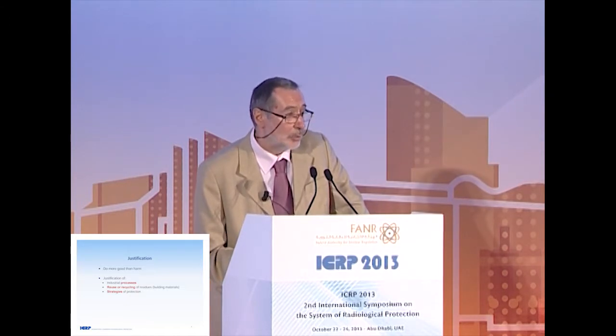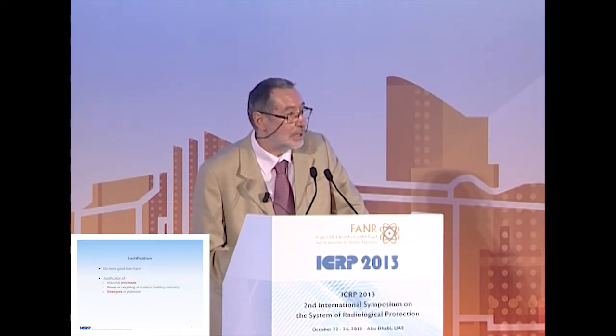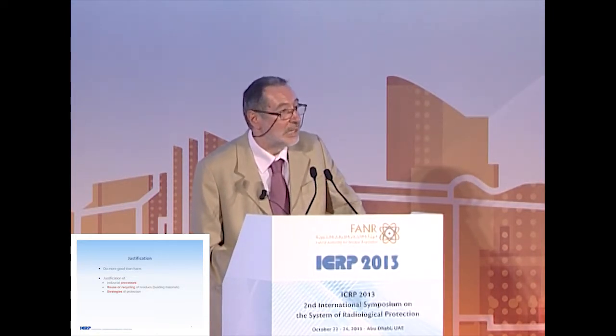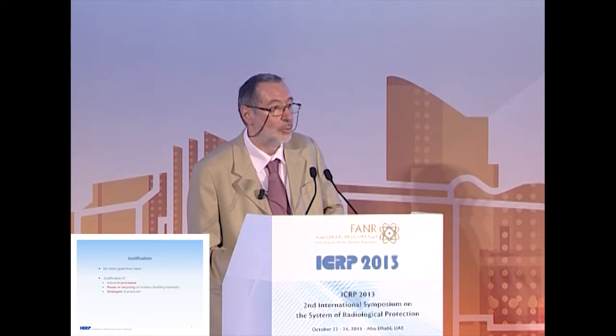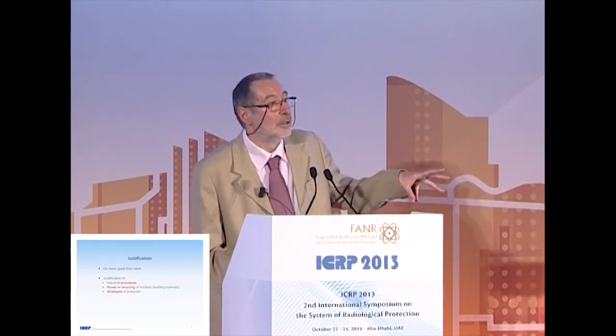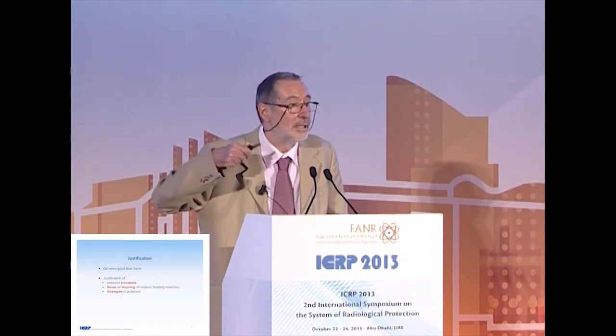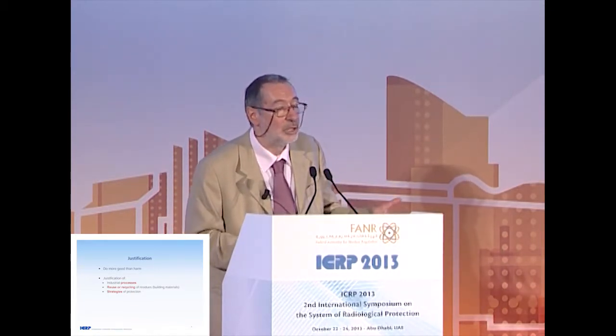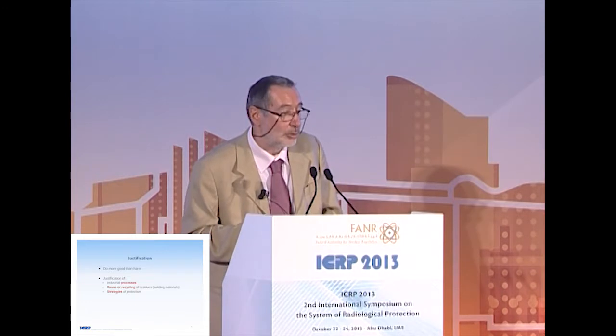Justification in the case of NORM industry is a key point because we have different things to consider. The industrial process itself should be justified, but also a key point is the reuse and recycling of residues. Today, in some cases, we claim it is ecological to reuse residues because it minimizes waste. But in some cases, these residues are used and disseminate exposure elsewhere. This radioactivity could be the main source in other places — for example, with building materials, which are the main source of radiation in some countries. Strategies of protection should also be justified.